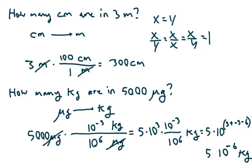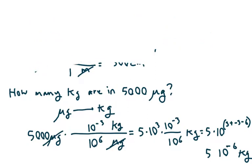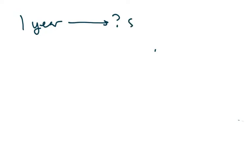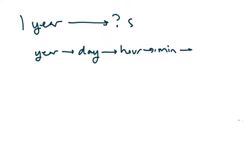Hopefully now we know how to convert between units — and it's not just for prefixes. We could do centimeters to inches or inches to centimeters. Let's do an example of how many seconds are in one year. This is going to require multiple conversions. Our game plan can be going from year to day — because we know that — to hour, to minute, to second.